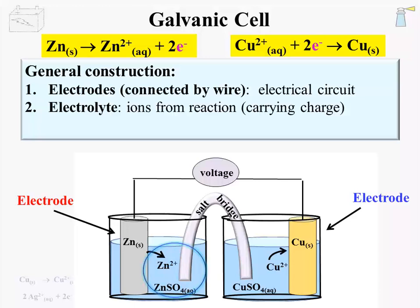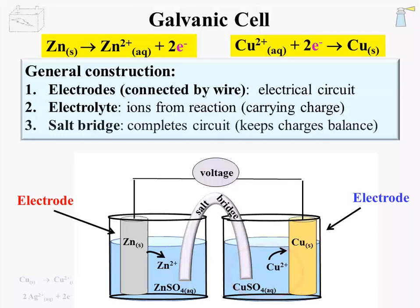The half-cell containing the oxidation needs a solution of dissociated zinc sulfate salt — the solid zinc and the ionic zinc have to be present together. The half-cell containing the reduction reaction needs a solution of dissociated copper sulfate salt; again, the half-cell needs to contain all species in the half-reaction, so solid copper and ionic copper must be present together. Also, the circuit needs to be completed and charges balanced. A connector called a salt bridge allows the migration of ions between the half-cells. A salt bridge is usually constructed of some damp porous material that facilitates the movement of ions.